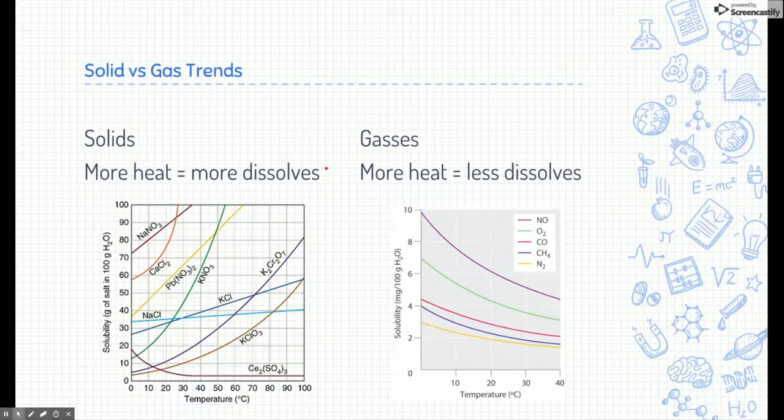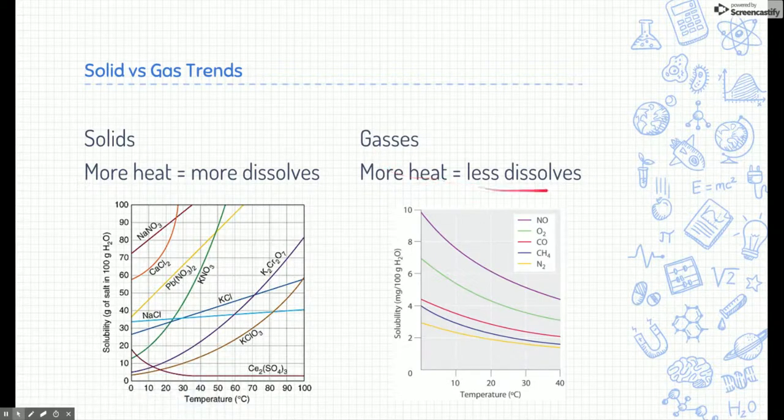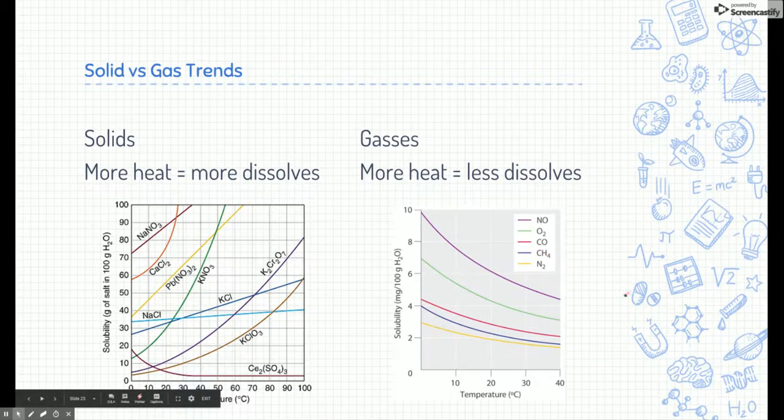Now, I want to show you a couple of trends. The graph we're looking at is solid graphs. If we increase the temperature for most solids, most of these things allow you to dissolve more. Now, here's a different solubility graph, and most of these things are gases. Gases are kind of the inverse. If you increase the temperature, most of these things dissolve less.